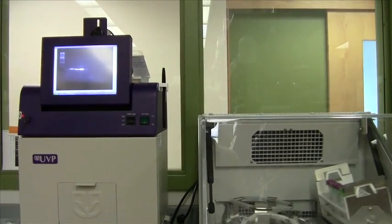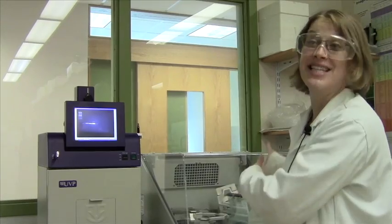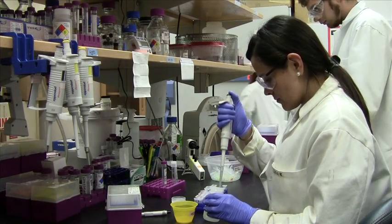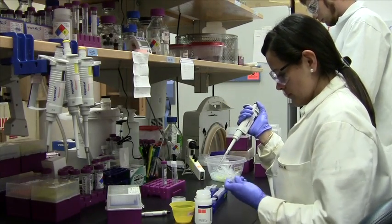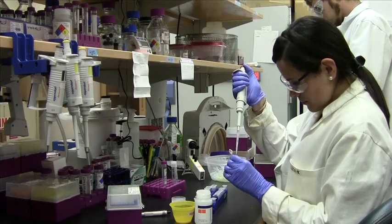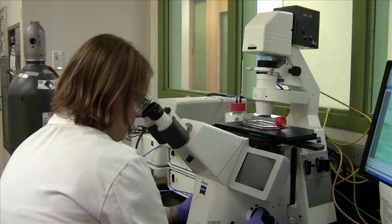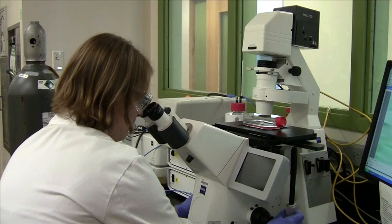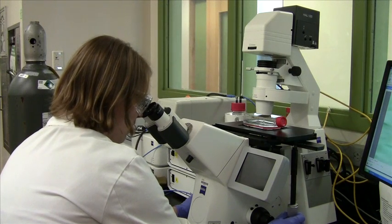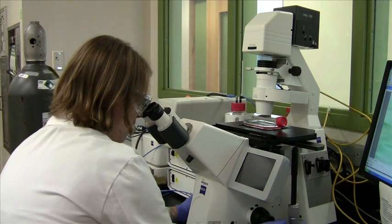And the gel imager here, this is how we image the DNA that we give to the bacteria before we give it to them. So often we can't just buy the DNA sequence for a particular gene that we're looking for. We have to synthesize it ourselves. And so this is how we image the DNA that we're synthesizing to make sure it's the right size, which is indicative that it's the right sequence, which we have to confirm later on. But this is how we get that first check that it's the right size, so there's a good chance that it might be the right sequence.